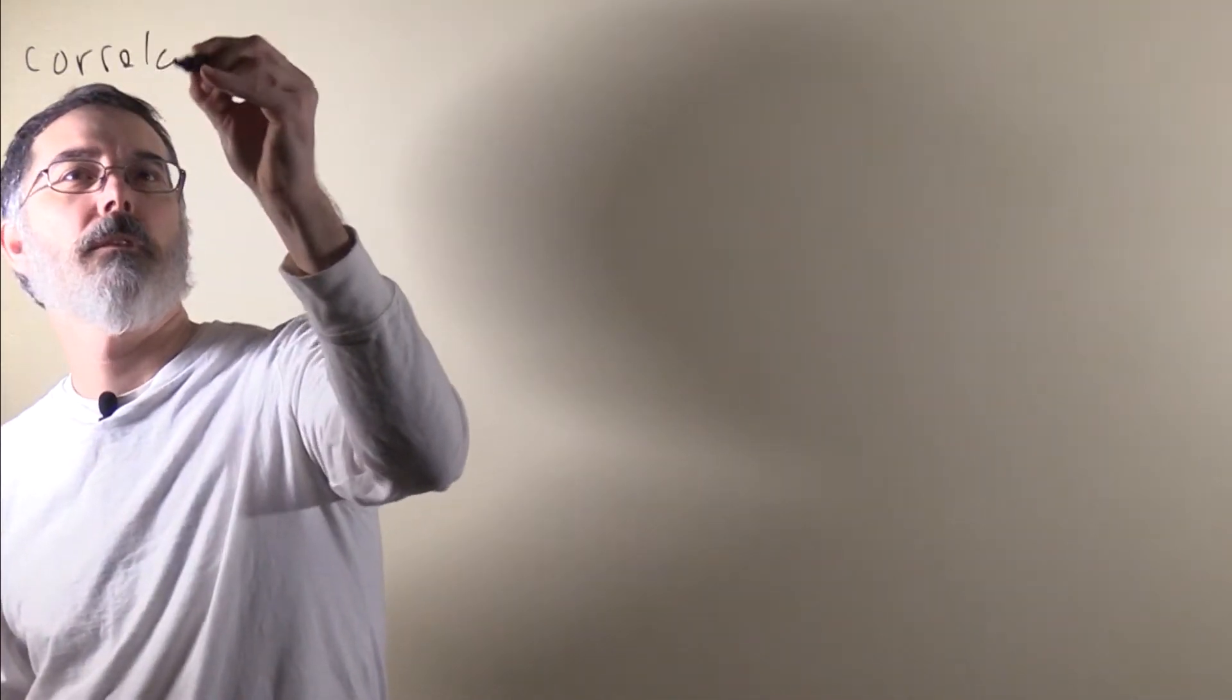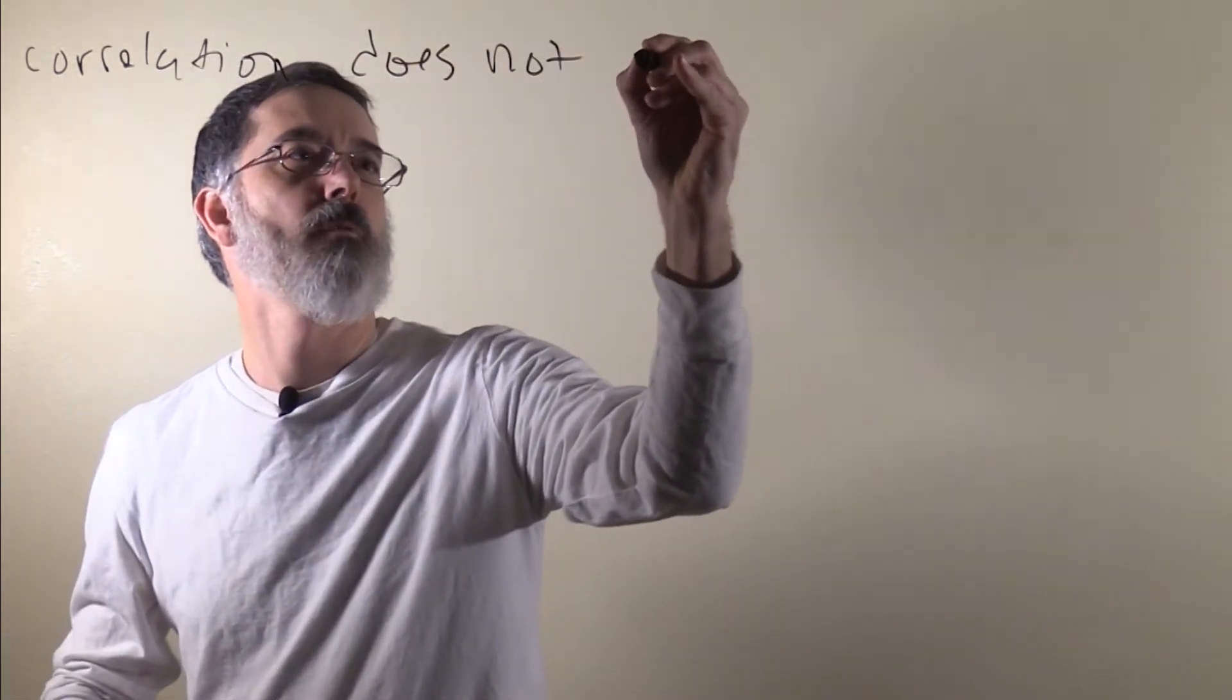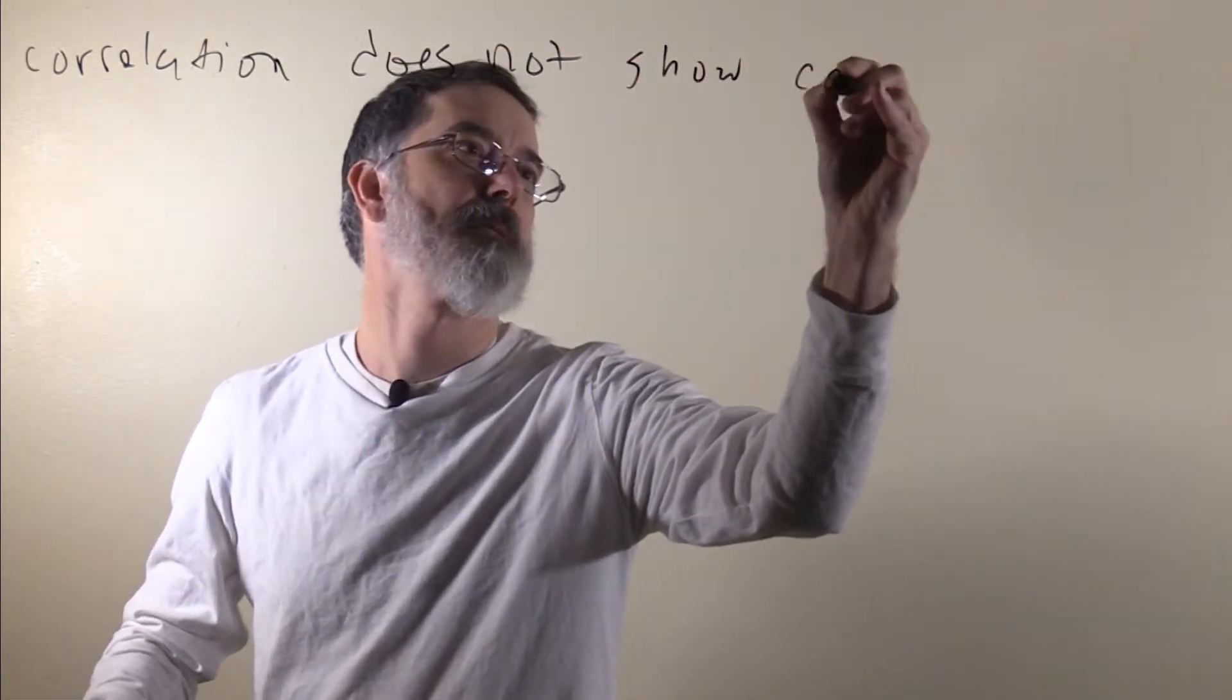Correlation can tell you if two variables are related to each other. They are really good at that. But what correlations can't do is tell you if one variable is a causal variable and the other one is an effect variable. A correlation can tell you if one variable is causing a change in the other. This is like one of the biggest limitations of correlation. Correlation does not show or prove causality.